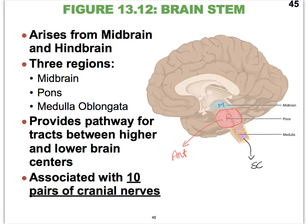Because the brain stem is literally the stem that holds up the rest of the brain, all information that enters the brain and leaves the brain via the spinal cord will have to go through that brain stem. And so it provides a pathway not only between higher brain centers, such as in the cerebral cortex, and lower brain centers within the brain stem themselves, but also between the rest of the brain and the spinal cord.